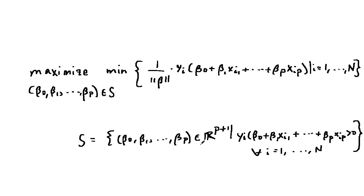the set of all vectors beta 0 through beta p in R^(p+1), such that this expression is greater than 0 for all i, as i ranges from 1 to n.